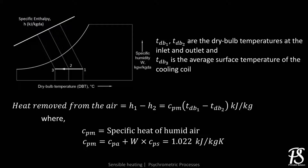The heat removed by the coil is equal to the difference between the inlet and the outlet enthalpy of air. Here, CPM is the specific heat of humid air, calculated using a given expression, where CPM is the specific heat of dry air and W is the specific humidity. Though the value of specific heat of humid air varies with the specific humidity of air, in most cases it is considered to be equal to 1.022 kJ per kg Kelvin.